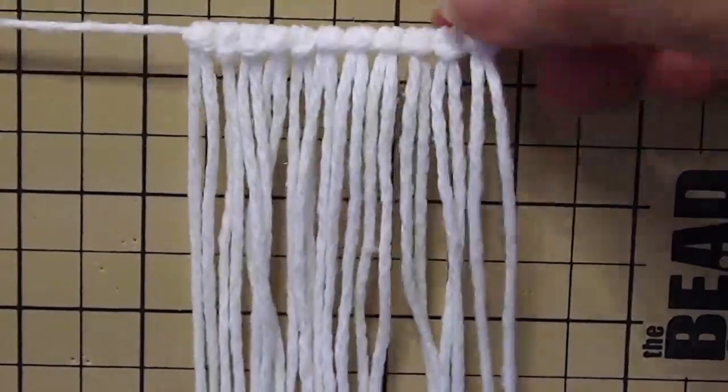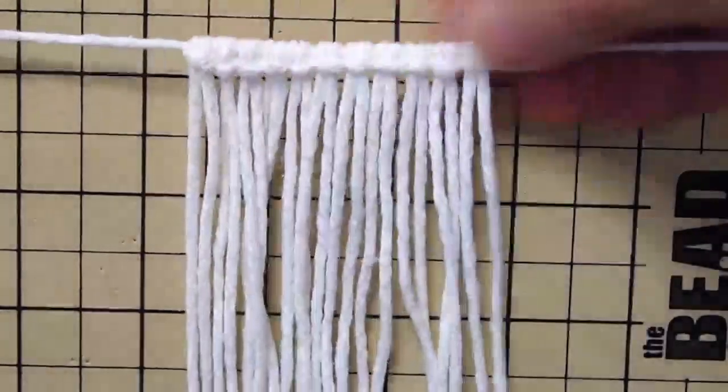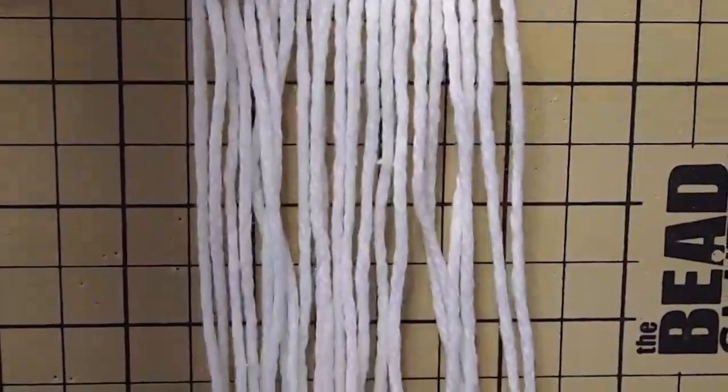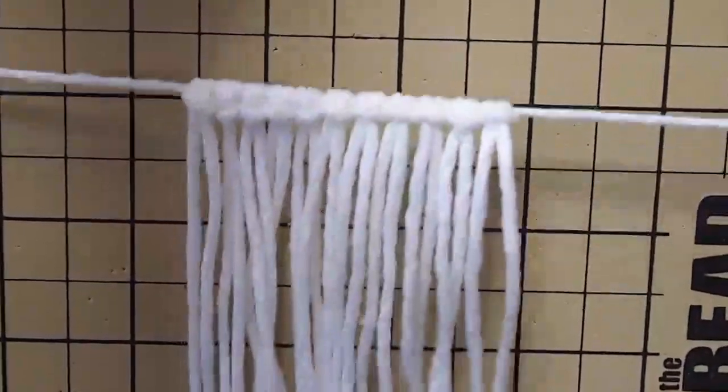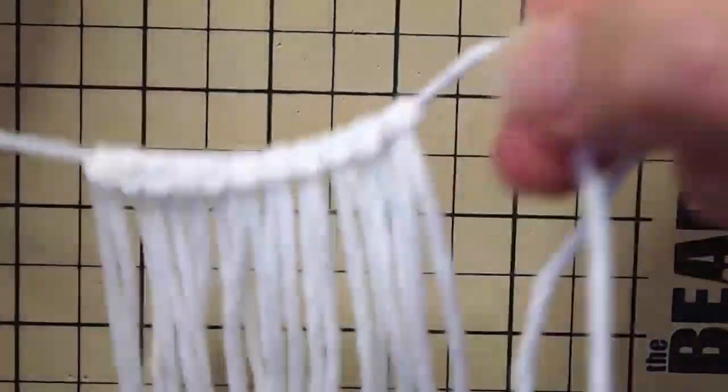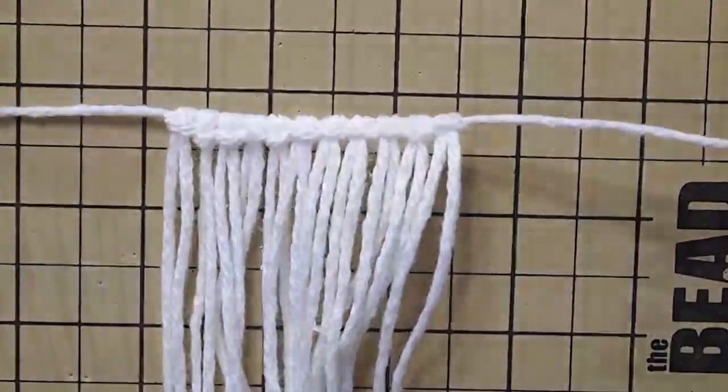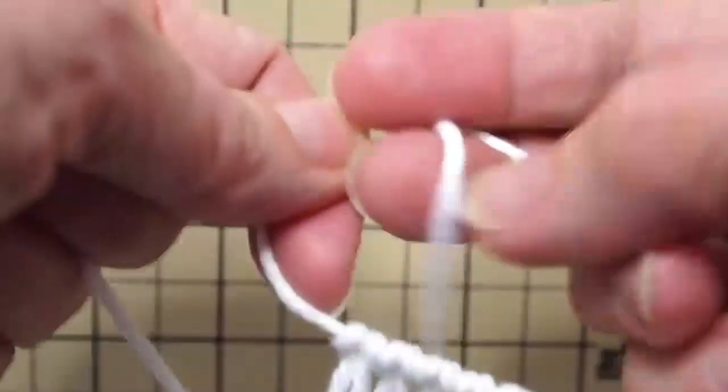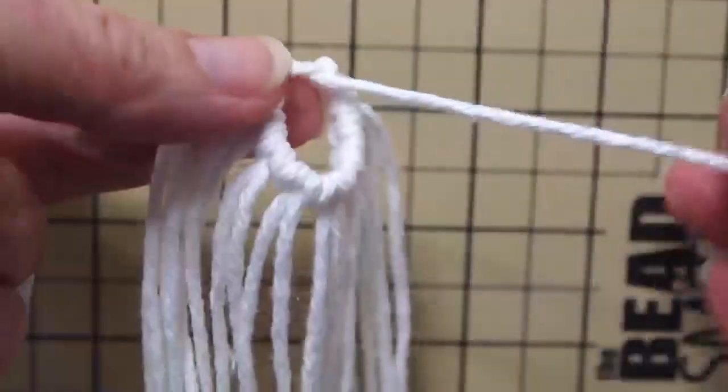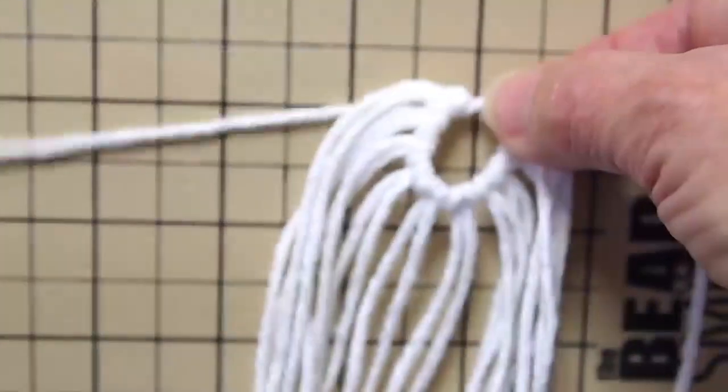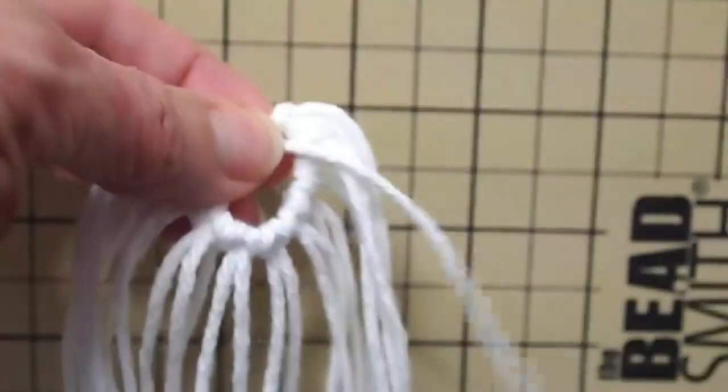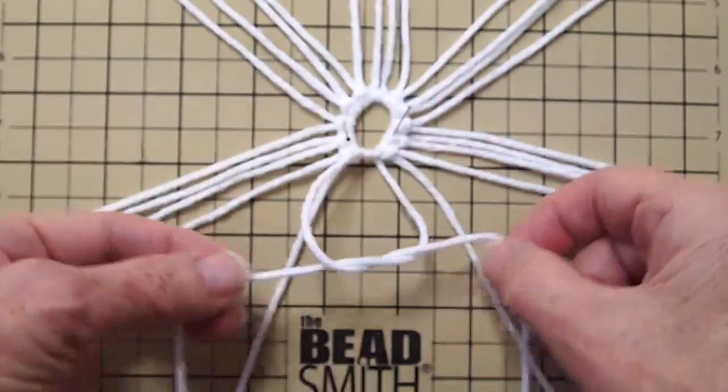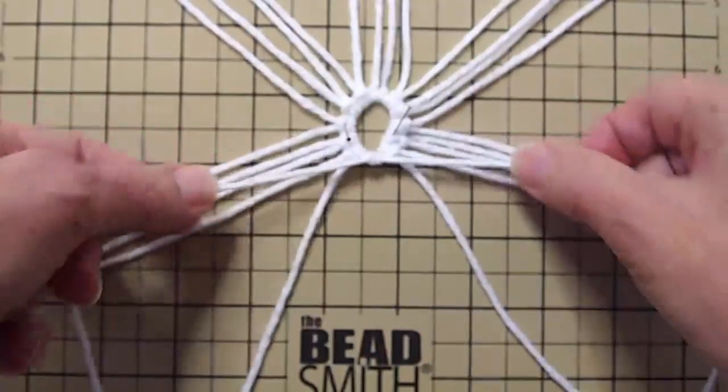Once you get all those cords mounted, you're going to pull it off your board and we're going to tie it into a circle. Swing it around and tie it in a knot. Just a regular basic knot until the two sides meet, pull it around to a complete circle, and then you're going to want to use some pins and pin it in place.